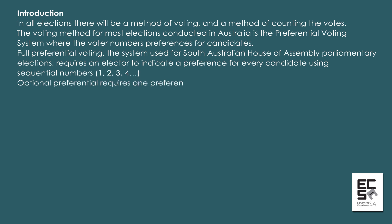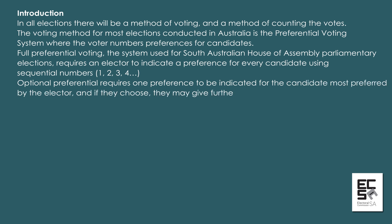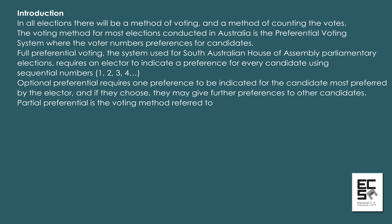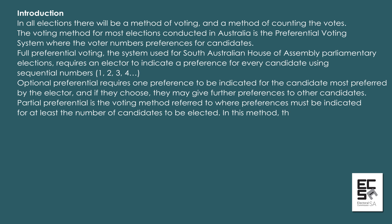Optional preferential requires one preference to be indicated for the candidate most preferred by the elector, and if they choose, they may give further preferences to other candidates. Partial preferential is the voting method referred to where preferences must be indicated for at least the number of candidates to be elected. In this method, the elector may also indicate further preferences.